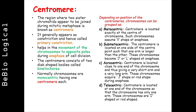The region where two sister chromatids appear to be joined during mitotic metaphase is known as centromere. It generally appears as a constriction and hence is called the primary constriction. It helps in the movement of chromosomes to opposite poles during anaphase of cell division. The centromere consists of two disc-shaped bodies called kinetochores. Normally, chromosomes are monocentric, having one centromere each.